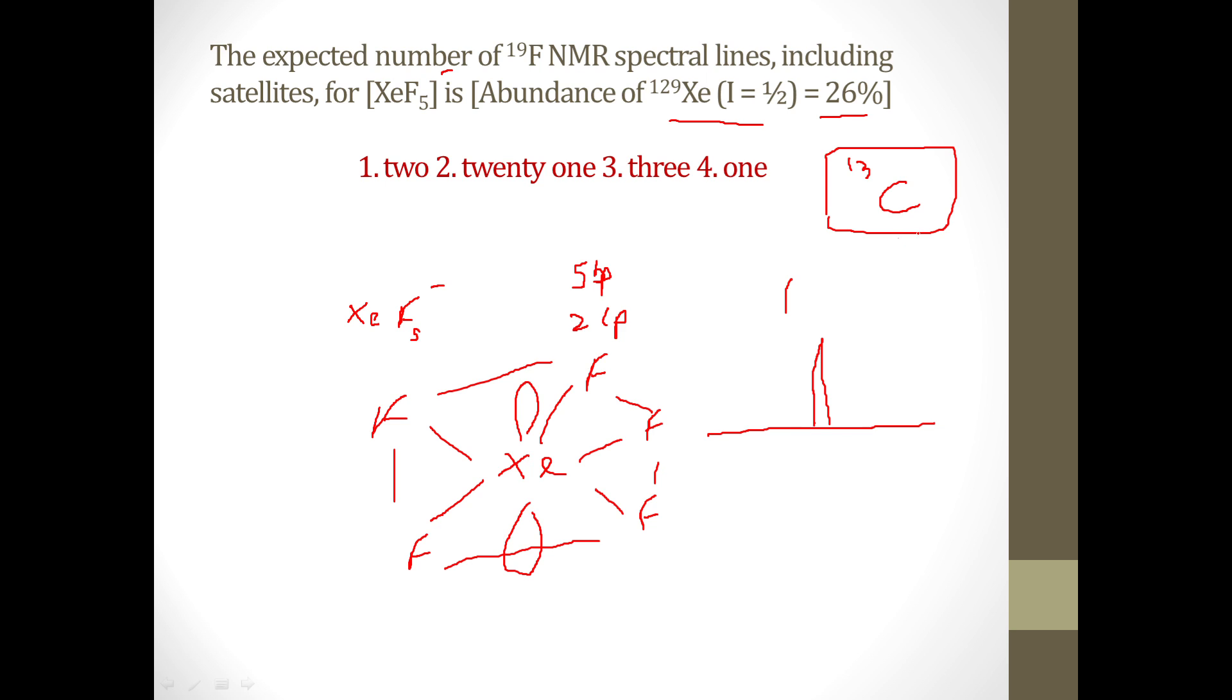But when we are doing the proton NMR, the abundance of this 13C isotope is so low that it does not couple and we do not see any peaks because of the coupling of the 13C and the proton.